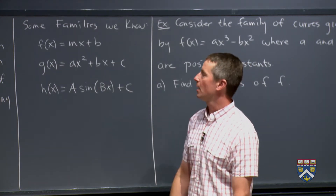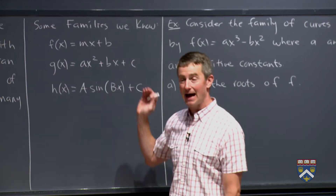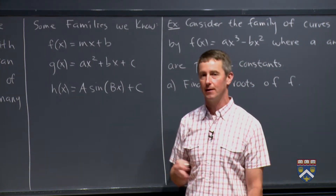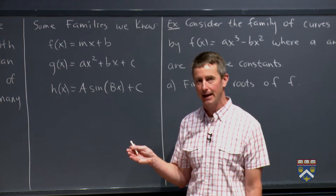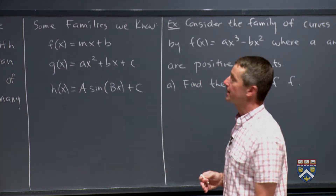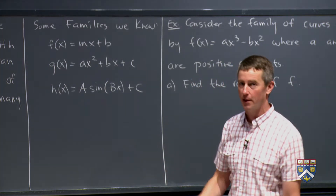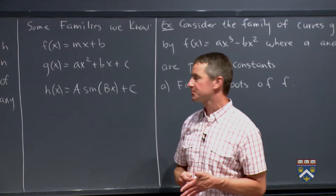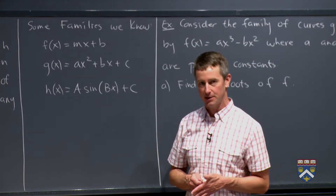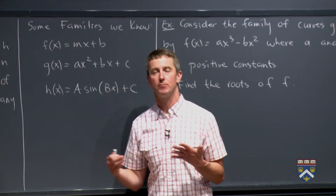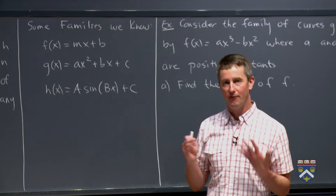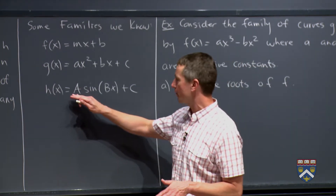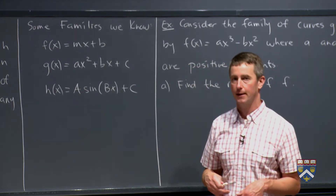Similarly, for quadratics ax² + bx + c, you probably know the sign of a tells you if the parabola opens upward or downward, you might know the formula for the x-coordinate of the vertex, negative b over 2a, and you might know how to find the roots using the quadratic formula. The family a·sin(bx + c) is one we looked at in the second week of the semester, and we benefited from knowing how a, b, and c affect the shape of the curve.